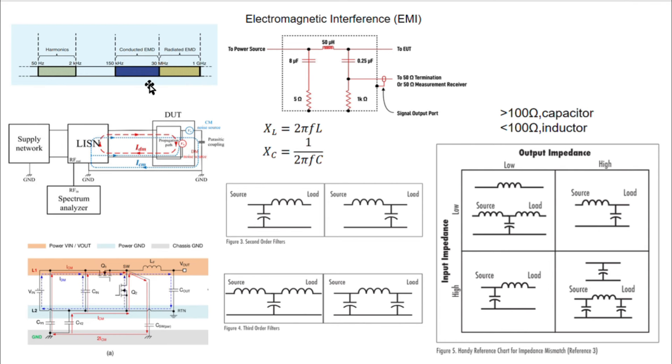Here we see a modeling diagram of a conducted EMI in a switching system. We have the device under test, DUT, normally a switching device. The propagation paths for common mode CM and differential mode DM, and EMI measurement line impedance stabilization network, LISEN, and the spectrum analyzer.